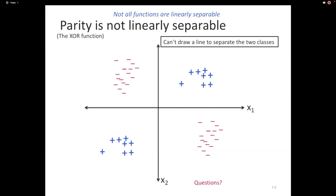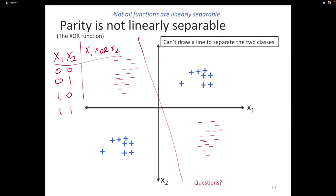With XOR, if you have two features, the output is true if both are true or both are false; if one is true and the other false, the output is false. Here's an easy way to see it: try to draw a line that keeps only the pluses on one side and all the minuses on the other side. You can't. No matter where you put the partition, some points will be misclassified. This is a simple Boolean function that is not linearly separable — a useful counterexample to keep in mind.